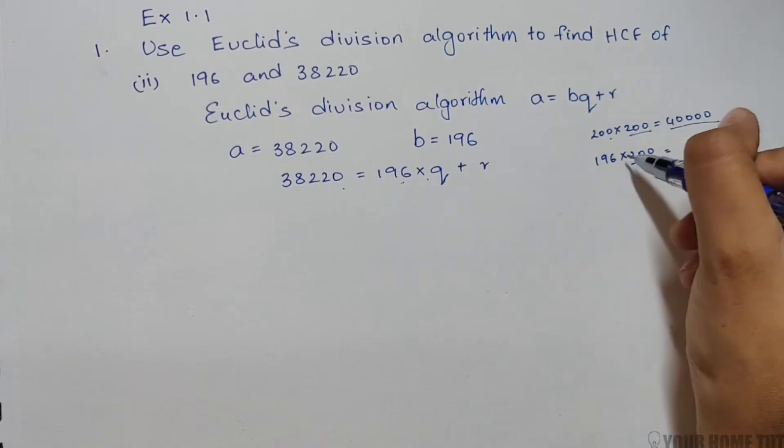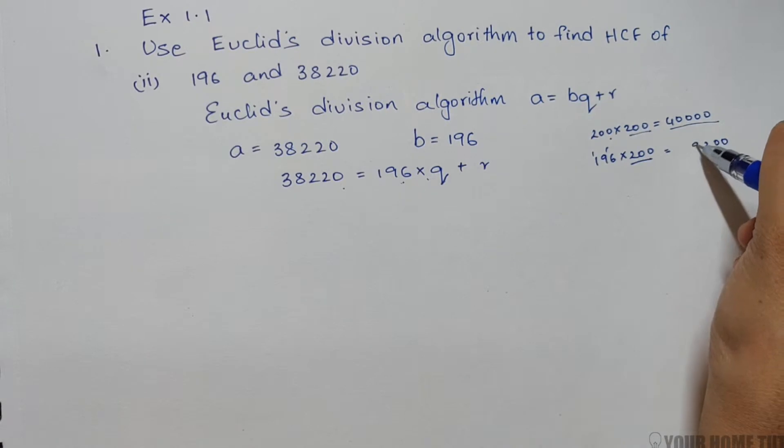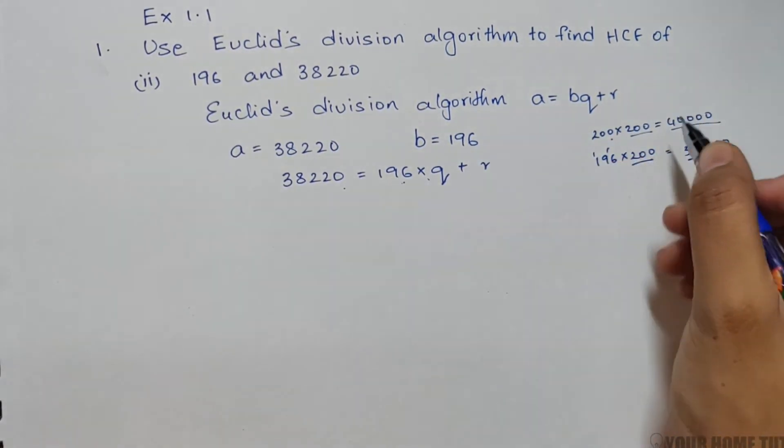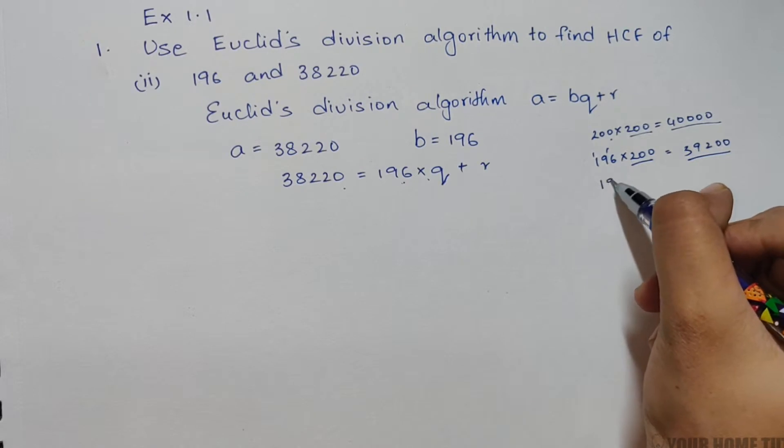6 times 2 is 12, carry 1 and 8, 9 times 2 is 3... That gives 39,200, which is more than our number. The next lower number divisible by 5 is 195.